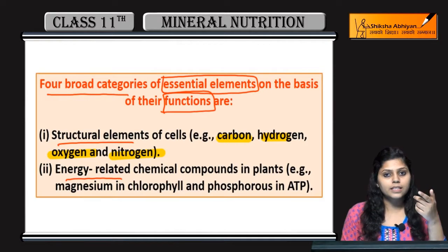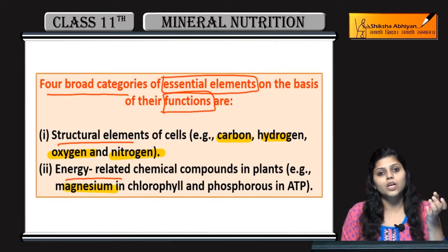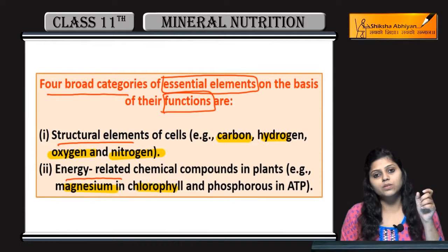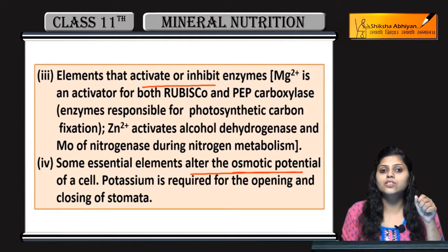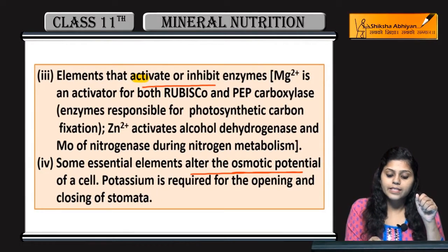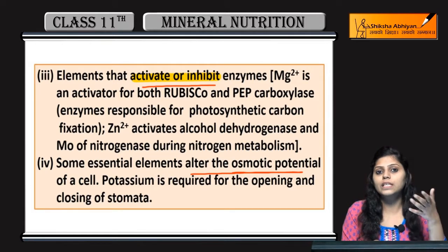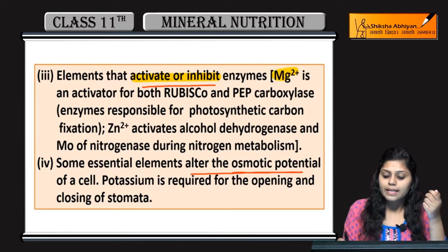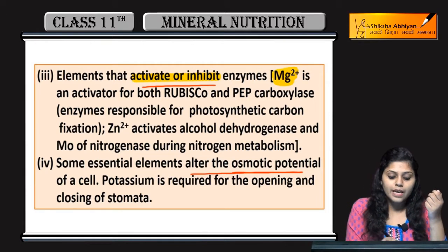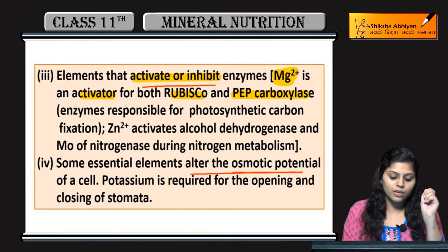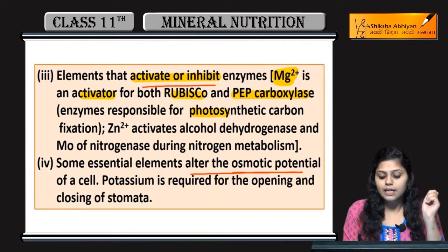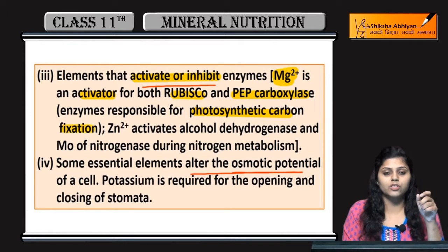The second category is energy-related chemical compounds. Magnesium is present in chlorophyll, and phosphorus is found in ATP — the energy currency of the cell. Elements like magnesium and iron also activate and inhibit enzymes; for example, they activate rubisco and PEP carboxylase (phosphoenol pyruvate carboxylase), which are responsible for photosynthetic carbon fixation.